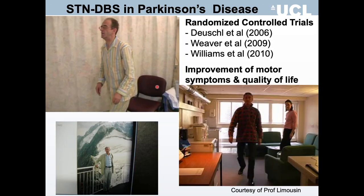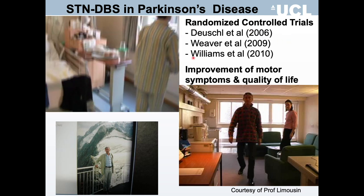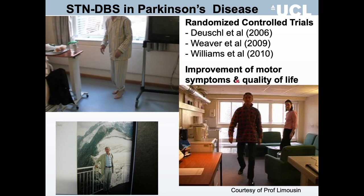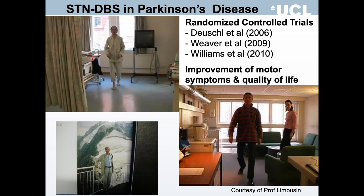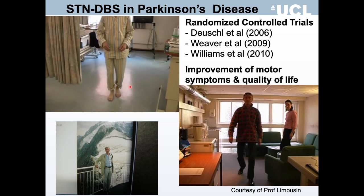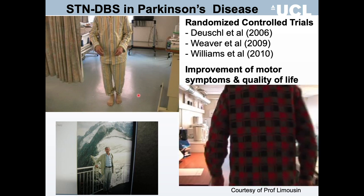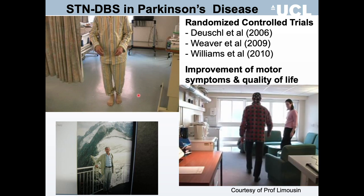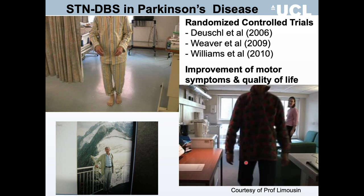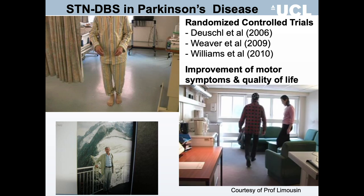DBS has been shown to be effective in randomized controlled trials from Germany, the US, and the UK to significantly improve the motor symptoms of Parkinson's disease as well as quality of life. These photos show the first patient operated in the functional neurosurgery unit in London, who had classical symptoms of Parkinson's disease preoperatively — tremor, rigidity, and motor slowness — and following surgery his motor symptoms had significantly improved.